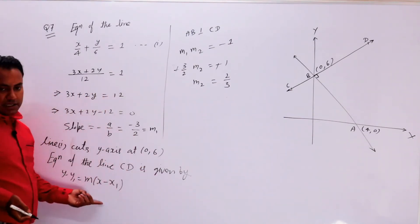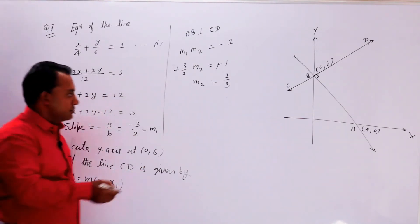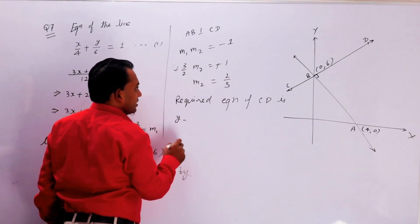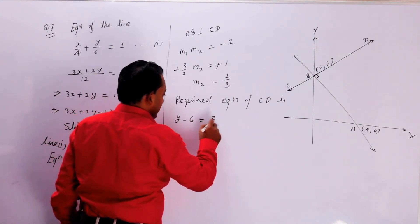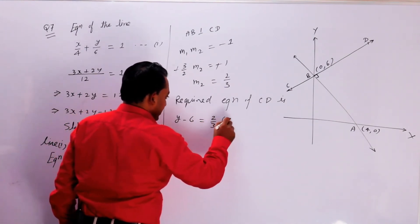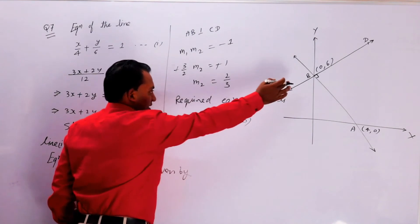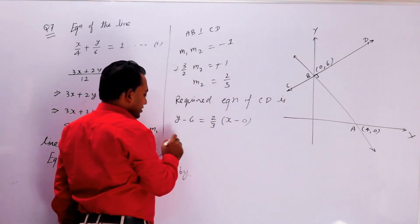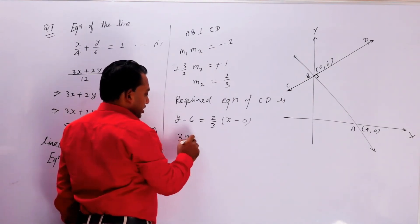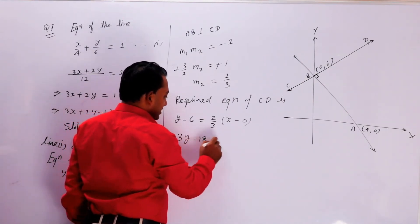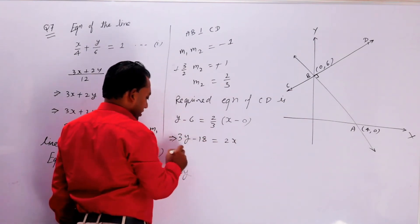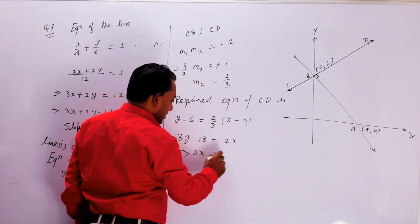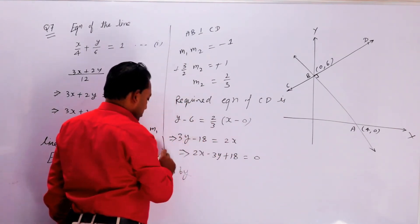यह formula use करेंगे और required equation मिल जाएगी। Required equation of CD is: y - y1 = m(x - x1), यहाँ y1 = 6, m = 2/3, x1 = 0। Cross multiply करने पर: 3y - 18 = 2x, implies 2x - 3y + 18 = 0। और यही वो required equation है जो आपको बतानी थी।